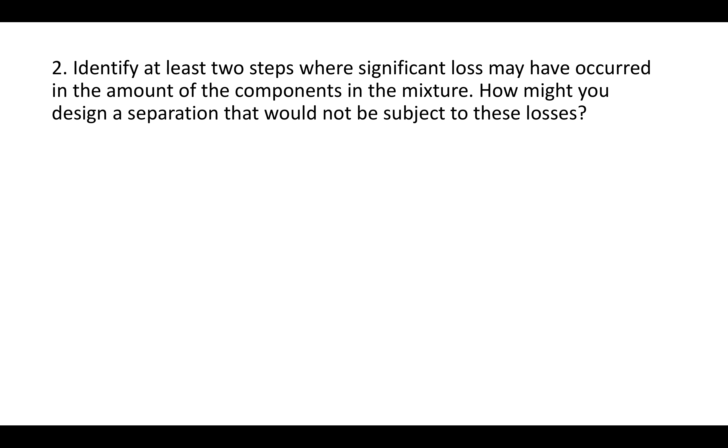So for that first part, where you identify at least two steps where loss may have occurred, make sure you give the letter for the part and then a number for the step in that part where you would have had a loss, and say what happened. In part A, step 3, you could have lost this by this.